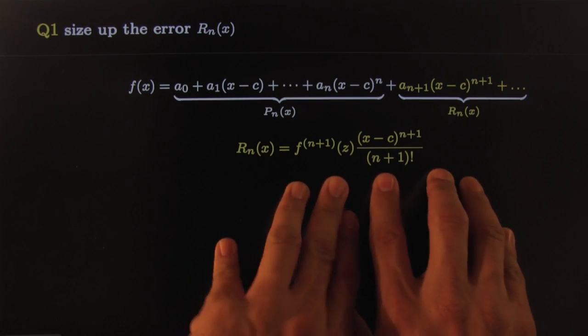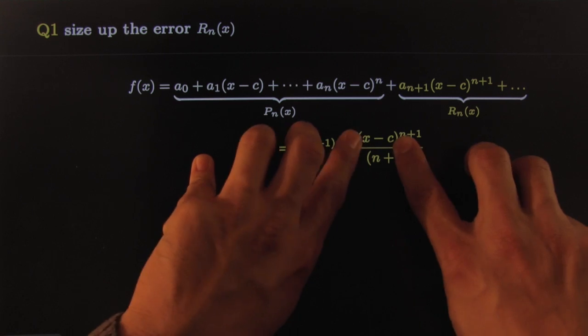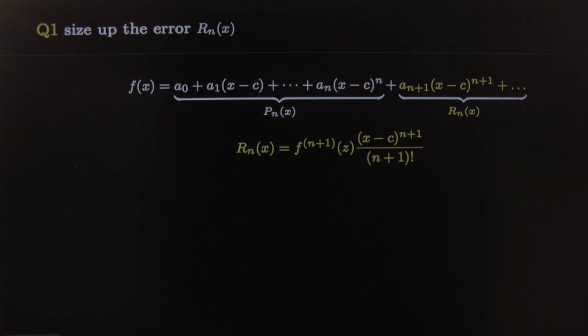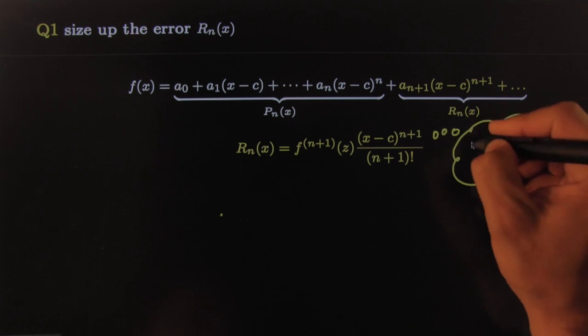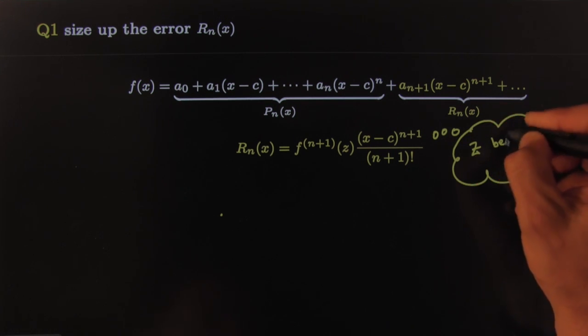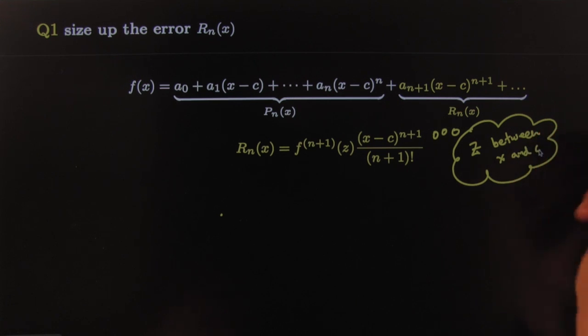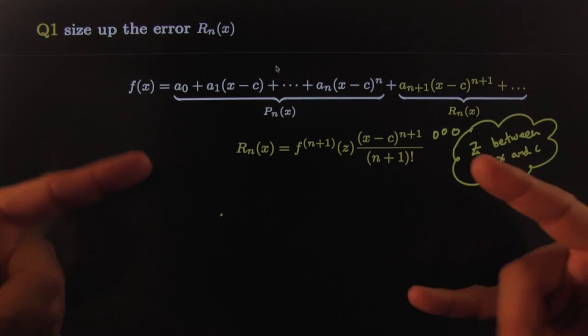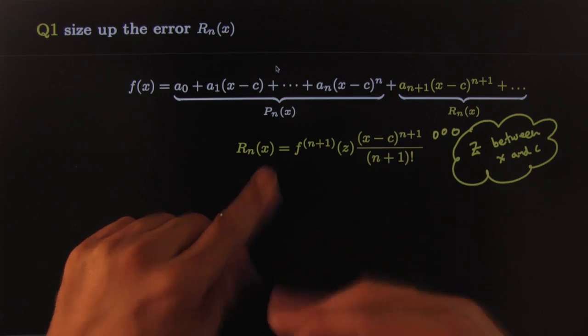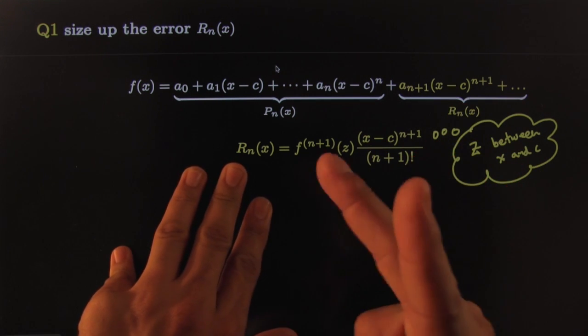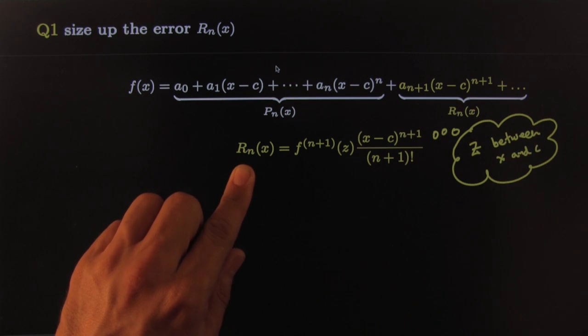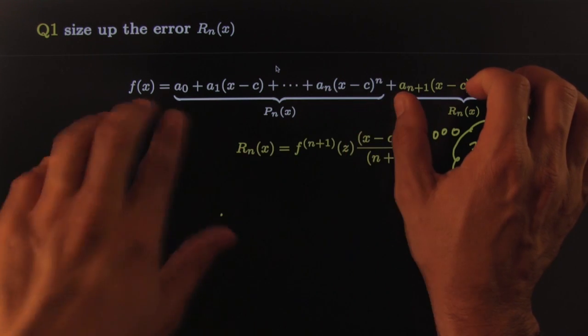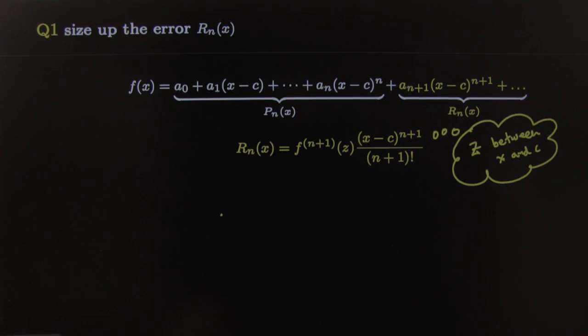Alright, z will be some number that we may not know that's between c and x. You can make a little note here if you like: z comes from somewhere within x and c. So how do you prove that? Well you have to pay extra to see the proof, but it's an amazingly brilliant proof by Lagrange. There's actually another one by Cauchy. I may put that in another video if people pay extra money. But the important thing is how do we use this. Let me show you how elegant this is. It is a way of controlling exactly how bad your error is after some given approximation is decided upon.